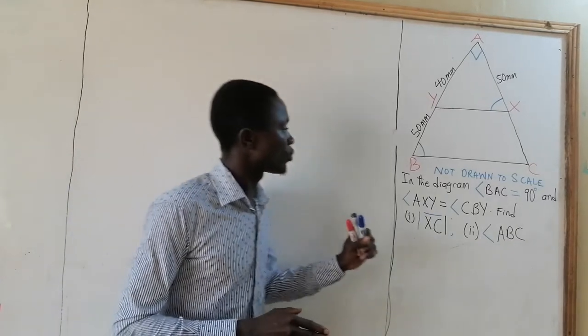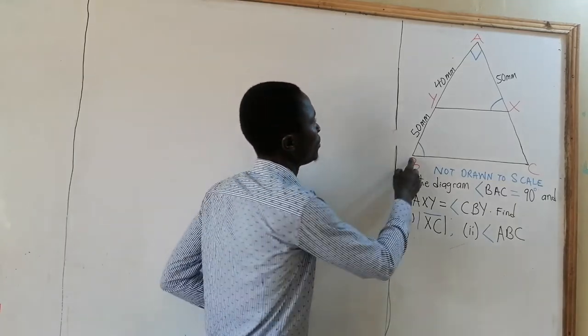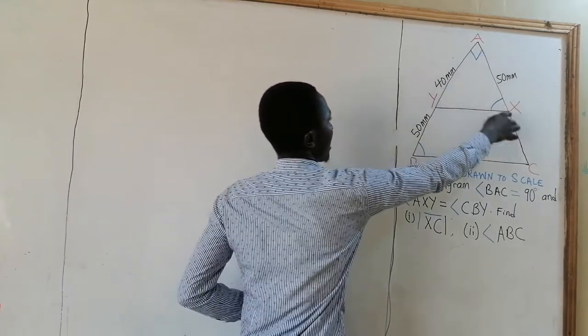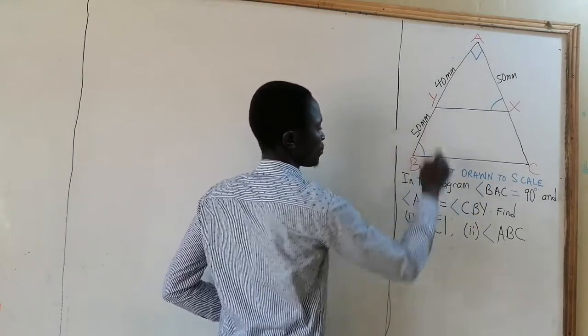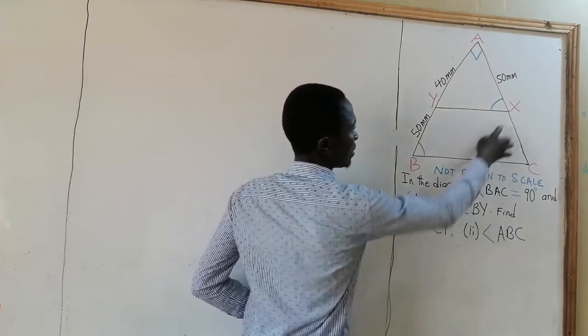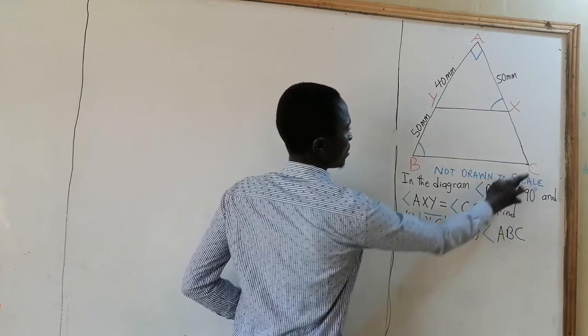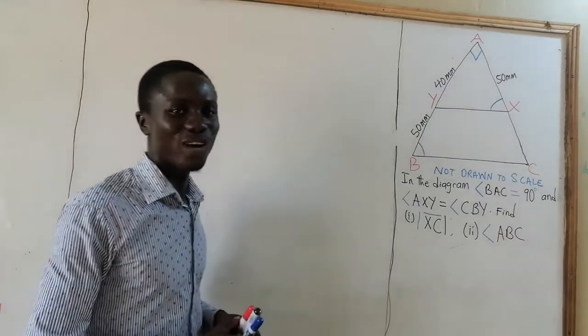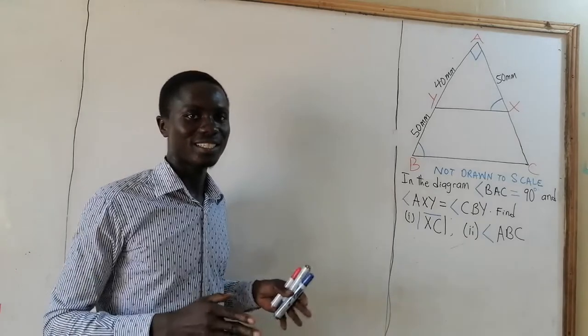If you look at the question, you see that in the diagram angle BAC equals 90 degrees and angle AXY equals angle CBY. Find (i) the length of side XC and (ii) angle CBA. Why don't you pause the video and give the question a try? After that, leave your answer in the comment section.